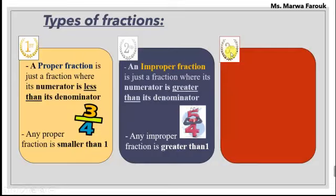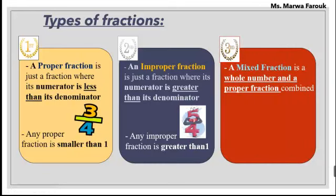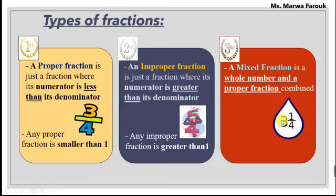The third type we have is the mixed number or mixed fraction. What is the mixed number or the mixed fraction? I have both a whole number and a fraction together, and this fraction is a proper fraction. Let's see an example. Here I have three, and three is the whole, and then a proper fraction. So when we have a whole number and a proper fraction together, it's called a mixed fraction or mixed number. How can I read this mixed number? I'm going to say three and one quarter, or three and a quarter.